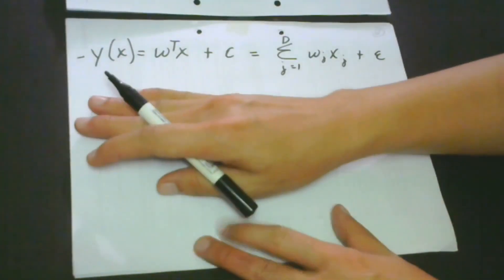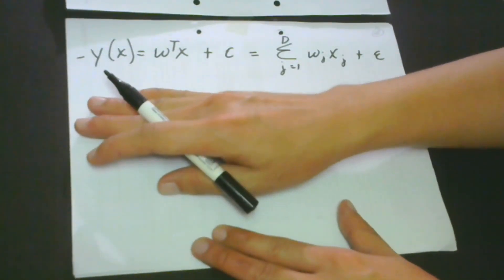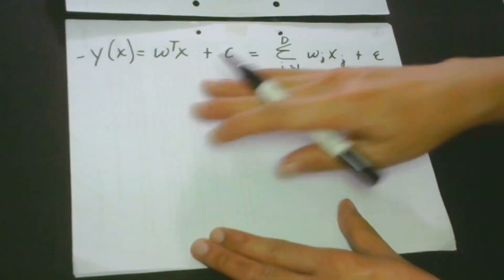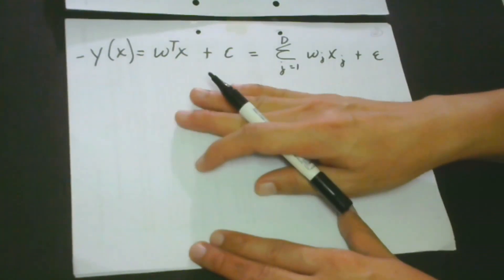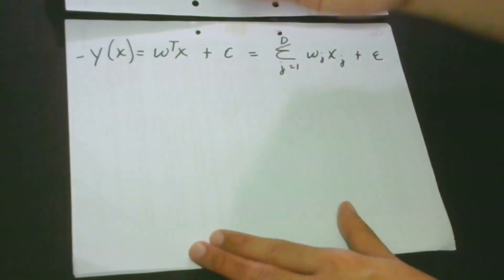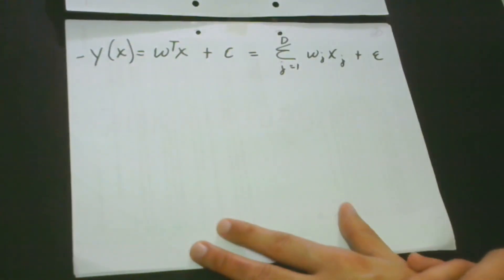Once again, this is a mathematical representation of linear regression. So what does this mean? So here, it shows that the response is actually a linear function of the inputs.